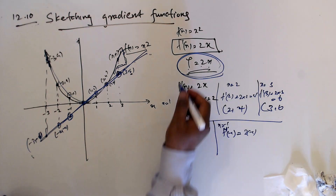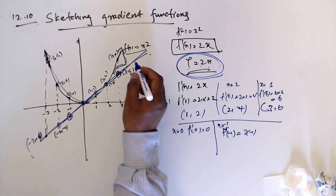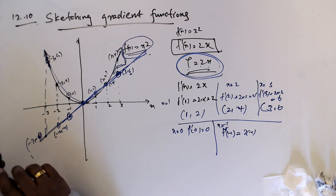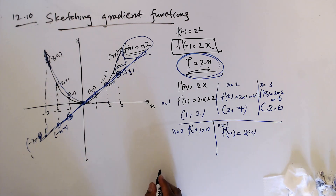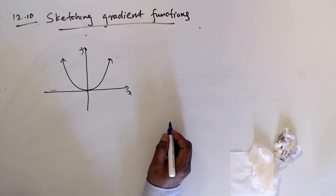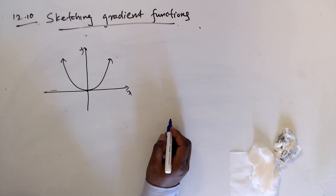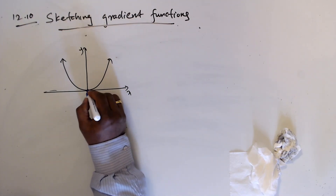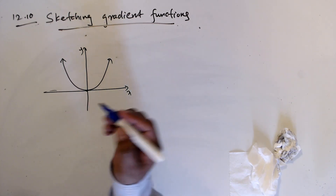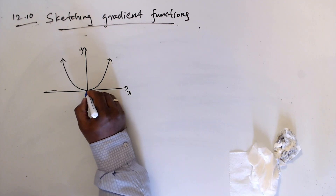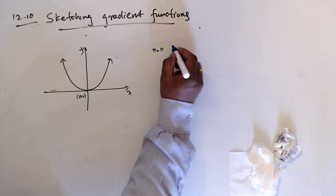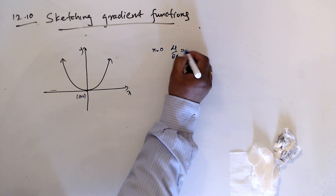Now what happens if I give you this curve without the equation? You can't find dy/dx algebraically. But you know the shape. We know this is the minimum point. The gradient at the minimum is zero — so when x equals 0, dy/dx = 0.